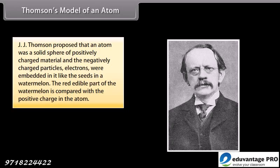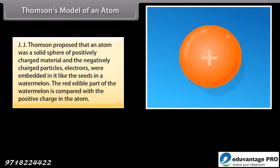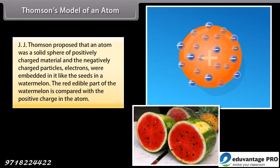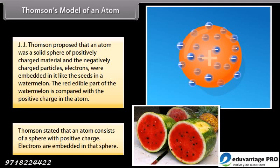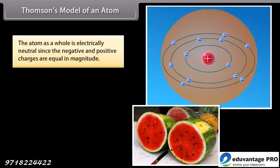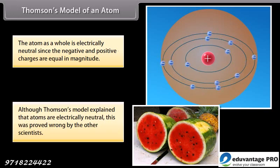The atom was a solid sphere of positively charged material, and the negatively charged particles, electrons, were embedded in it like the seeds in a watermelon. The red edible part of the watermelon is compared with the positive charge in the atom. Thompson stated that an atom consists of a sphere with positive charge. Electrons are embedded in that sphere. The atom as a whole is electrically neutral since the negative and positive charges are equal in magnitude. Although Thompson's model explained that atoms are electrically neutral, this was proved wrong by the other scientists.